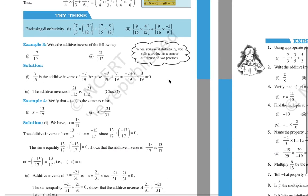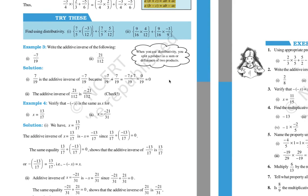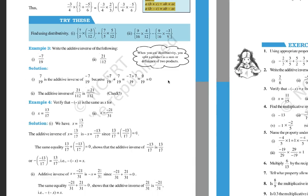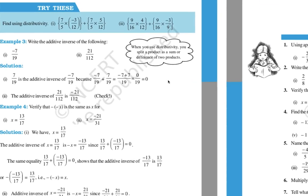One property to remember: when multiplying, if both numbers are positive, the result is positive; if both are negative, the result is positive; if one is positive and one is negative, the result is negative. Remember this rule for multiplication.